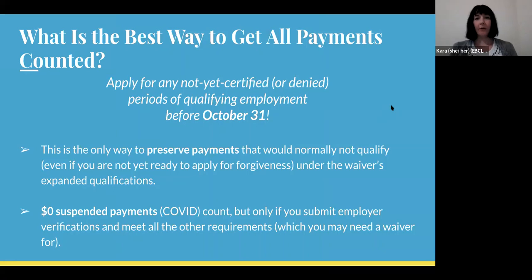So what is the best way to get all payments counted? Apply for any not yet certified or even previously denied periods of qualifying employment before this October 31st. This is the only way you can preserve payments that would normally not qualify, even if you're not ready to apply for forgiveness yet under the waiver's expanded qualifications. So if you still have another five years of payments left, but you don't submit something now, then in five years, they probably will not count any of these payments that would have counted under the waiver. So it's important to get it turned in. Also note that the $0 suspended payments under the COVID program do count as payments under PSLF. If you otherwise qualify, meaning you've submitted your PSLF form for a qualifying employer during this whole time period, they will count each month that you didn't actually have to pay anything as a payment, which is great.